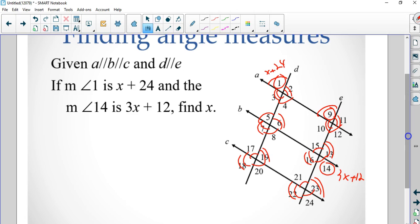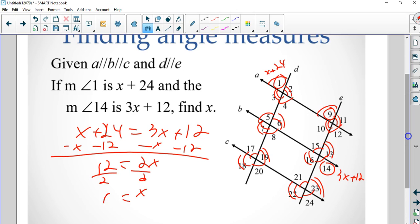So now we know that 1 and 14 are both acute angles. We can just say that x plus 24 equals 3x plus 12. And now we can just go back to algebra. We subtract x, 24 equals 2x plus 12. Subtract 12 again, equals 12, divide by 2, and then x equals 6.